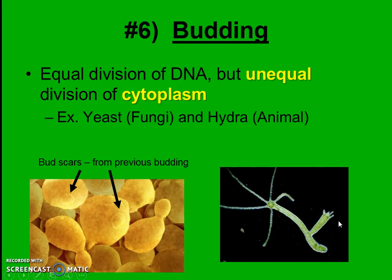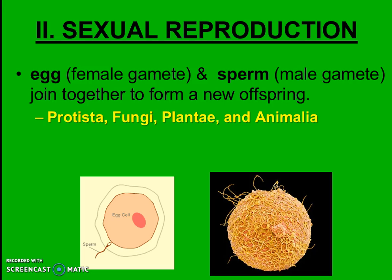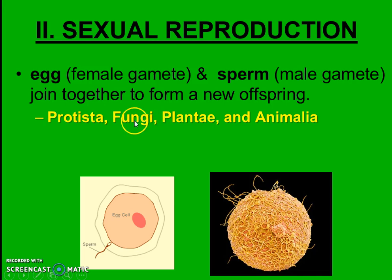So that's asexual reproduction — it's always an identical clone. This is compared to sexual reproduction, which is always going to involve an egg and a sperm, a male and female gamete forming together. This happens in the following different kingdoms: protists, which are single-celled eukaryotes; fungi; plants; and animals. Notice that bacteria are not listed here — they do not do sexual reproduction.